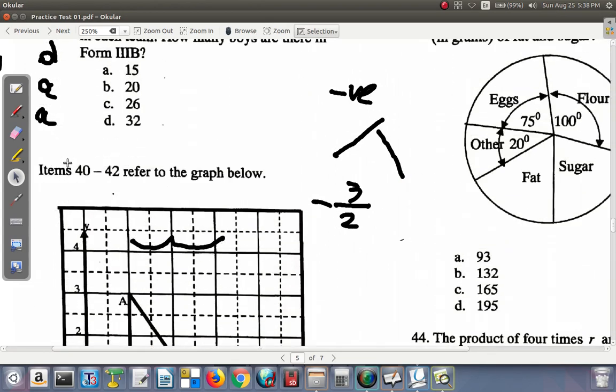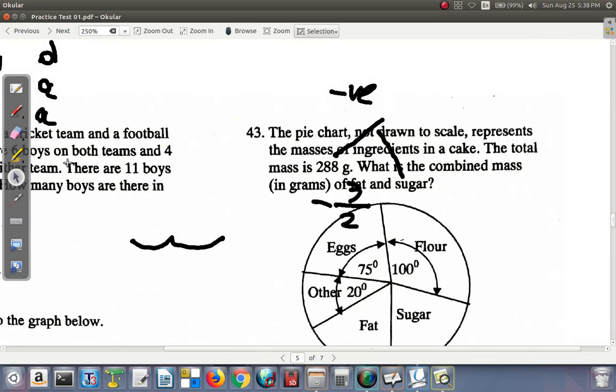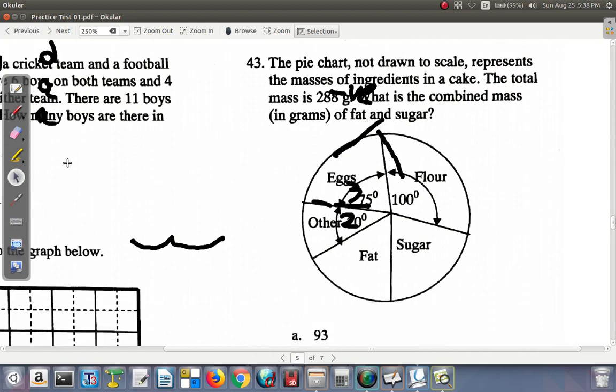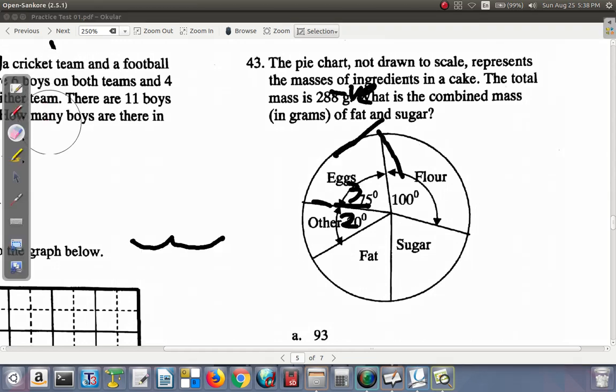Now, we want to look at question 43. See what 43 says. The pie chart, not drawn to scale, represents the masses of ingredients in a cake. The total mass is 288 grams. What is the combined mass in grams of fat and sugar? Fat and sugar. Combined mass in grams.